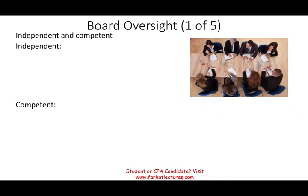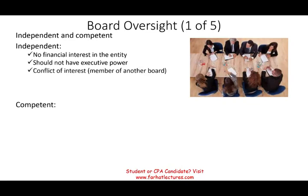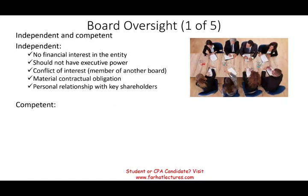How do we determine that the board is independent? They should not have any direct financial interests in the entity, because their decisions might be biased. They should not have executive powers or run the company at the same time. They should not have any conflict of interests — for example, they cannot be a board member of a competitor. They should not have any material contractual obligation with the company, nor personal relationships with key shareholders or key management. And they should not stay for a very long period of time, such as 10, 15, or 20 years, because you need fresh perspectives.